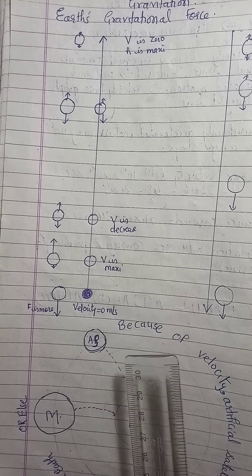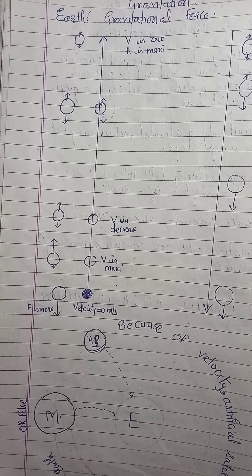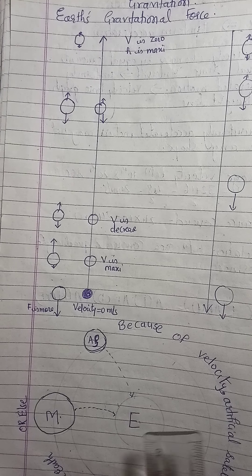The apple is also attracting the Earth, but the mass of the apple is very less as compared to the mass of the Earth. Therefore, though the apple is attracting the Earth towards itself, because its mass is very less, the Earth cannot jump and move towards the apple.